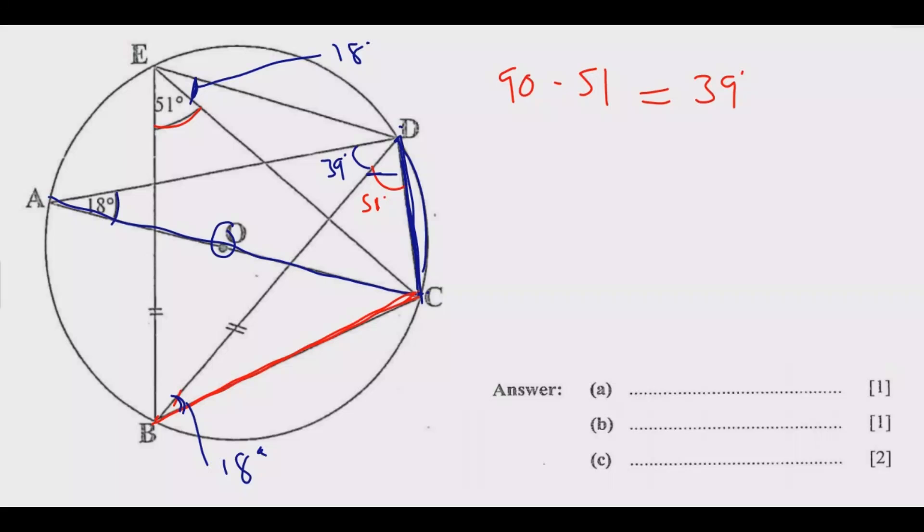What other angle can I find? I know these two are equal. If these two are equal, it means this entire angle and this entire angle should be the same. The total angle here will be 51 plus 18 degrees, which gives me 69. So the entire angle is 69 degrees, which means this angle should be 69.